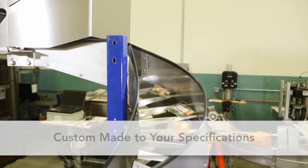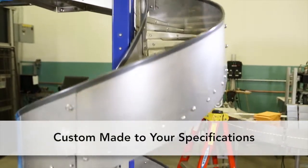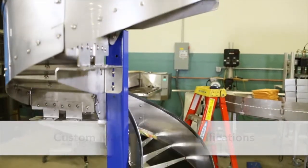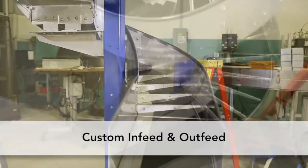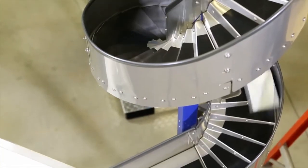Dorner's spiral chutes are custom-made to your exact specifications. In-feed and out-feed locations and spiral direction are all customizable to meet your layout requirements.